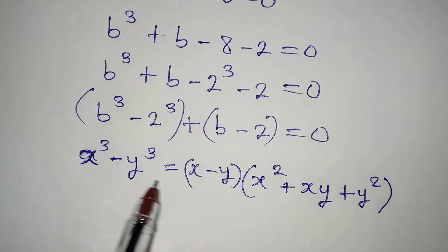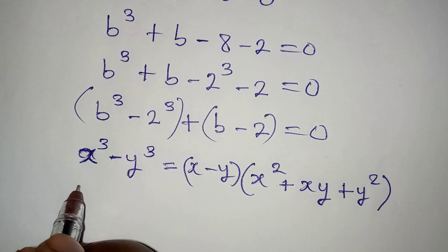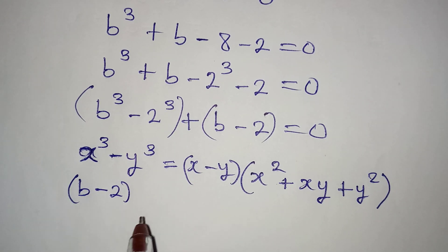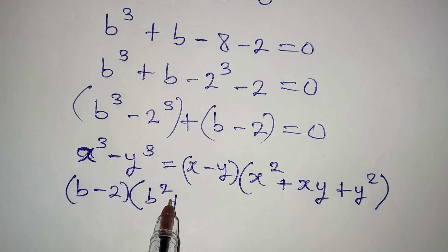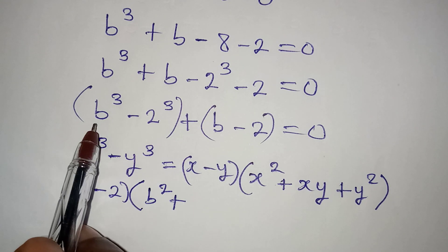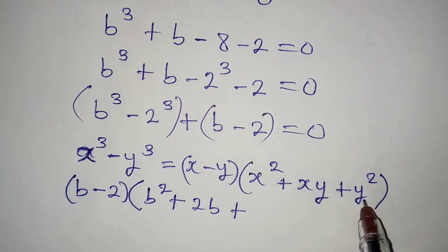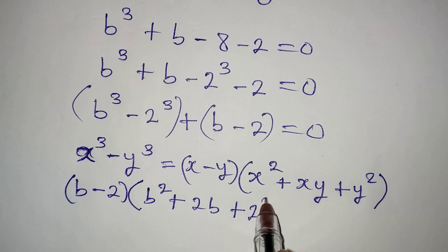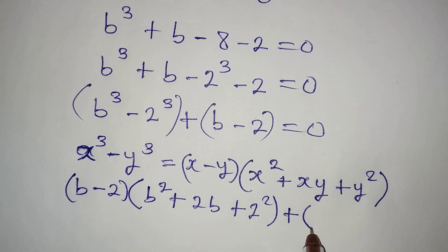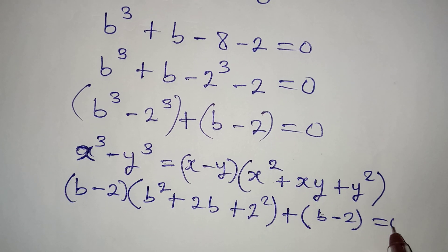We apply this same standard here, so x minus y becomes b minus 2 in the first bracket. In the second bracket, we have b squared plus — xy becomes 2 times b, that is 2b — then plus y squared, which is 2 squared. Then plus the bracket b minus 2, equal to 0.